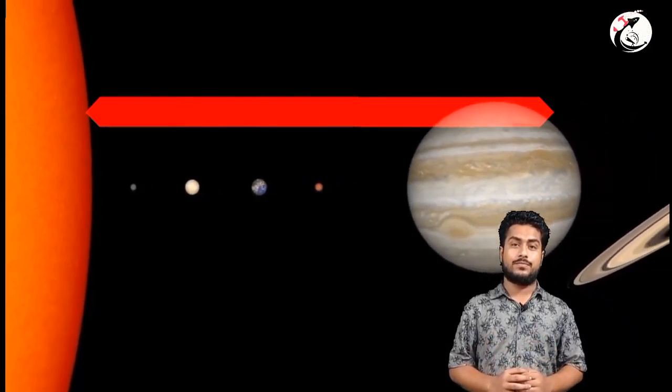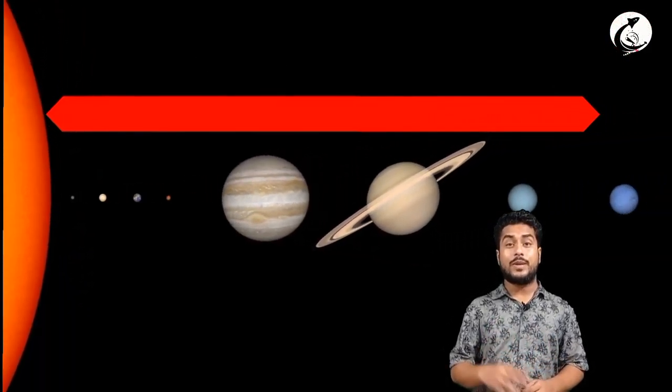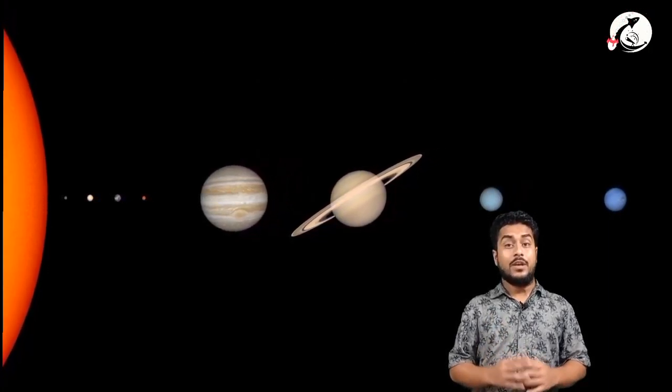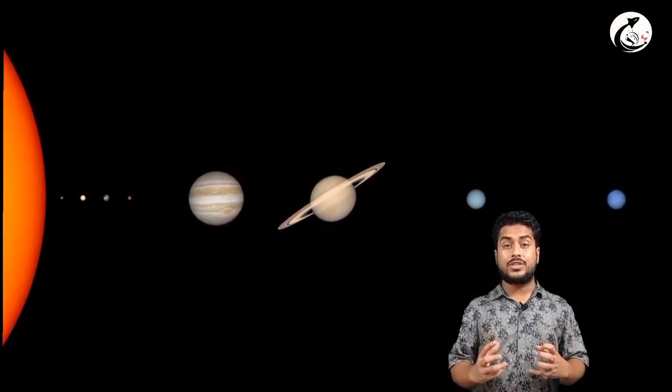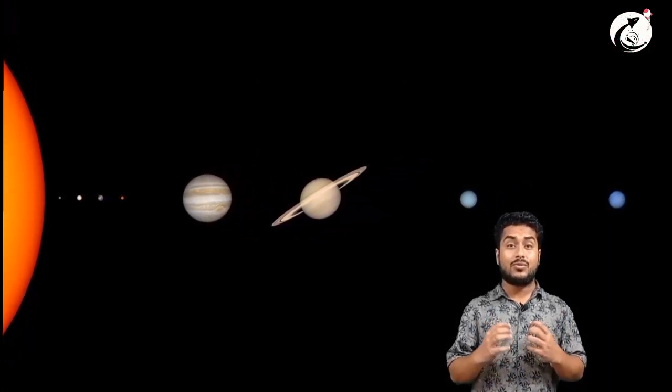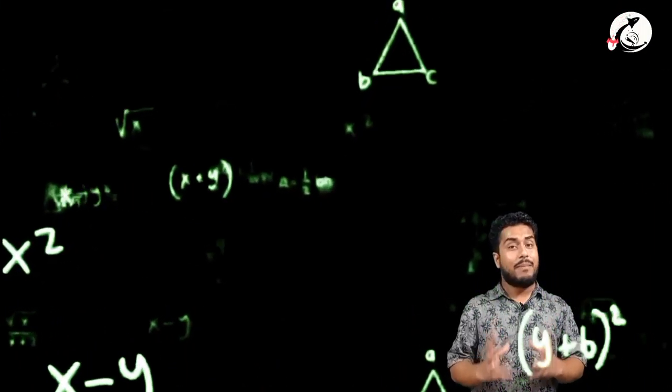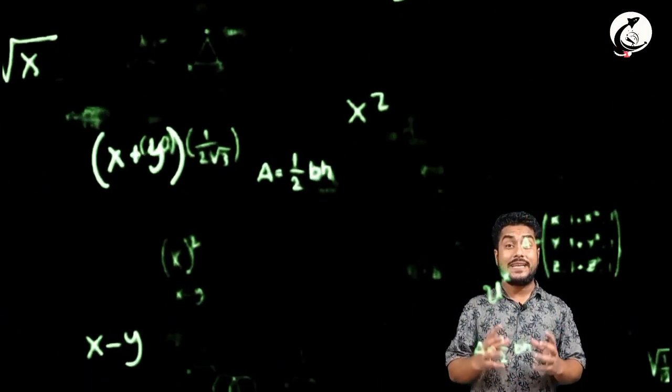The Earth is 15 crore km from the Sun. Jupiter is 78 crore km from the Sun. Neptune is about 450 lakh crore km. So this is the distance measured in Astronomical Units — the distance from the Sun.